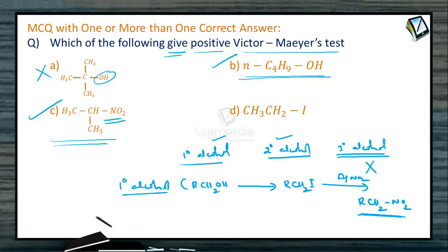So therefore C also gives, and this is ethyl iodide. Primarily ethyl iodide is a part of Victor-Mayer reaction. Therefore this ethyl iodide also gives.